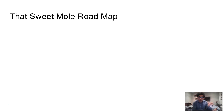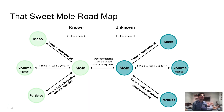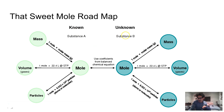Sweet mole roadmap — let's take a look at this. This is a mole roadmap that is specifically for use with stoichiometry problems. It's helpful if we can identify what our known substance is and the unknown substance we're trying to find out about, and then we can use this in action.